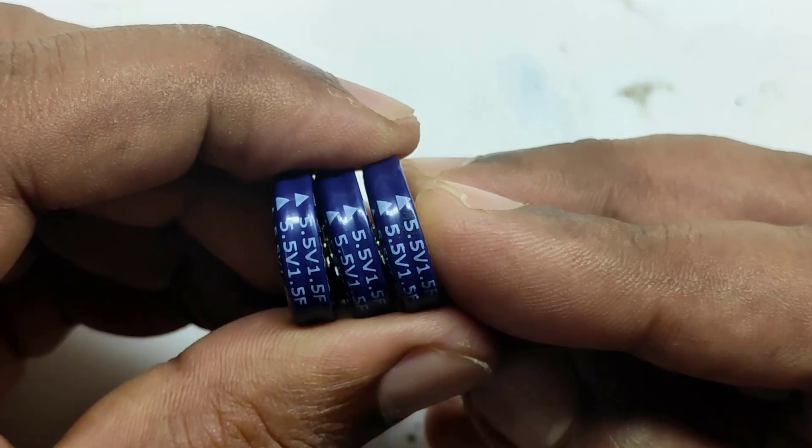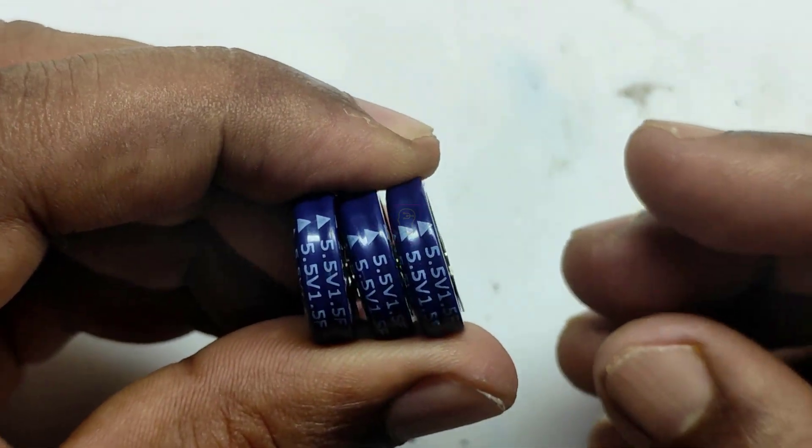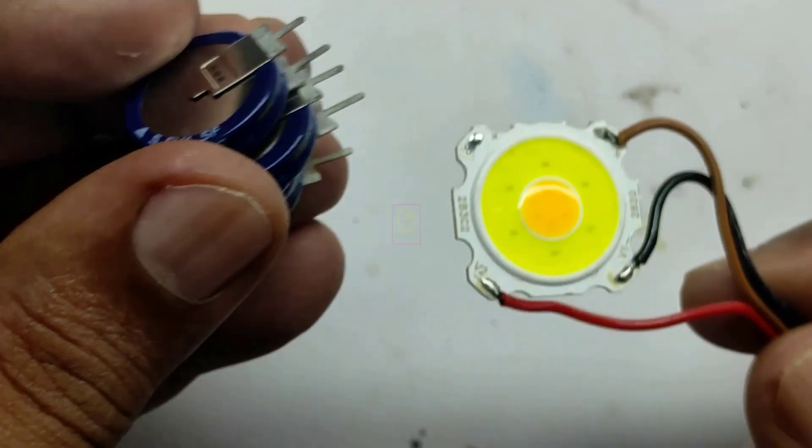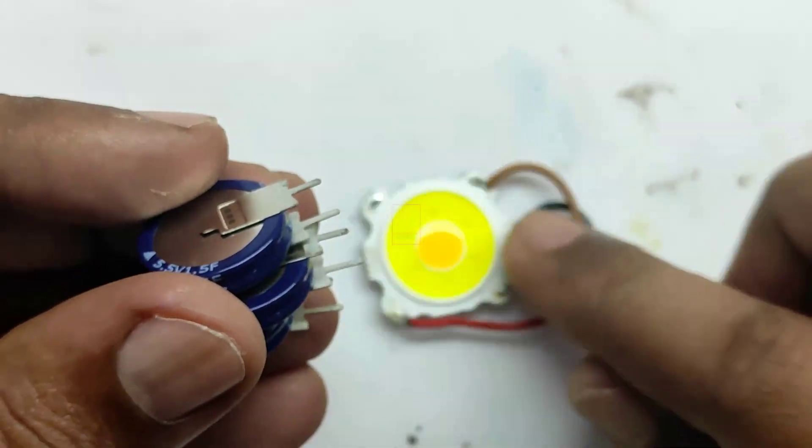We can connect three capacitors in series for doing an operation in 12 volt. We will connect these capacitors in series and will charge it, and will try to light this LED. Then we will analyze how long the LED will light up using the charge from these capacitors.